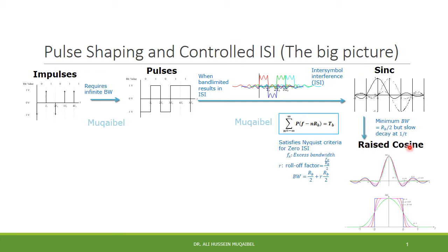To solve the decay problem, we move to the next option: the raised cosine. Raised cosine represents a family of curves — here we show the time domain raised cosine and the associated spectrum. When going from SINC to raised cosine, we pay a price in terms of extra bandwidth, but we get a smaller tail. SINC is just one member of this family, and raised cosine pulses also satisfy the Nyquist criteria for zero ISI.